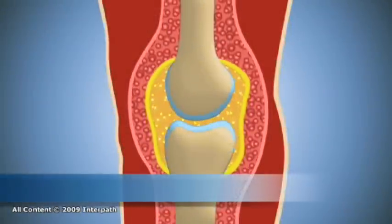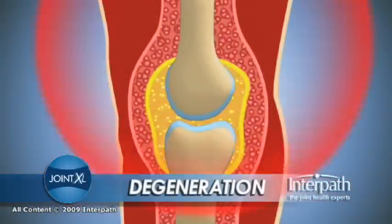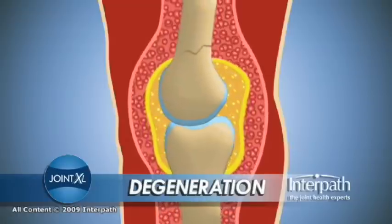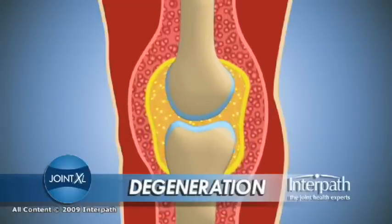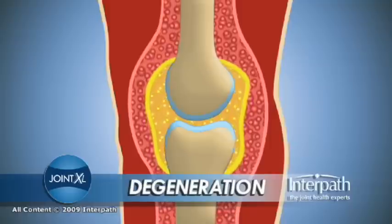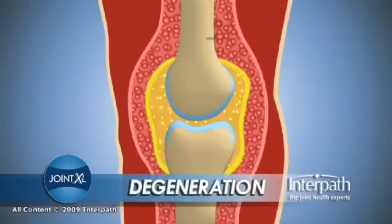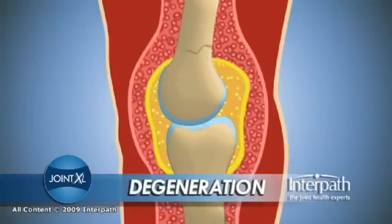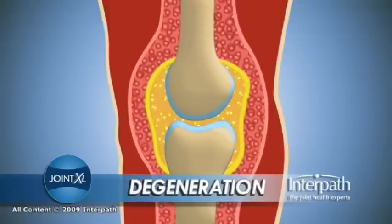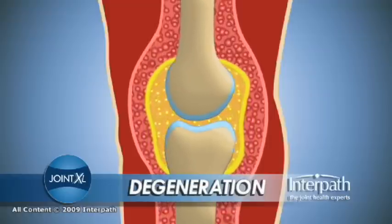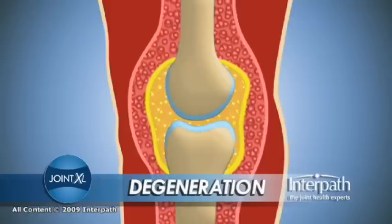Trauma to the joint can occur through many injuries including dislocation, fracture, infection, or overuse. Cells within the synovial membrane and the cartilage respond to trauma by producing chemicals designed to break down damaged tissue and kill damaged cells. They also destroy infectious agents and rebuild new tissue. This is a normal healthy process and protects joints from everyday damage.